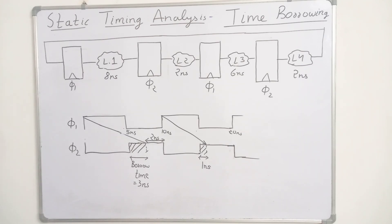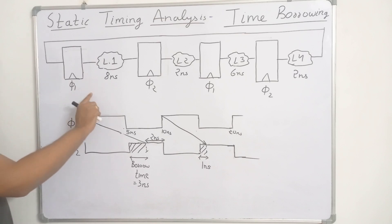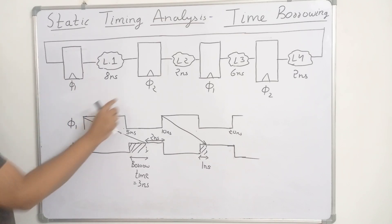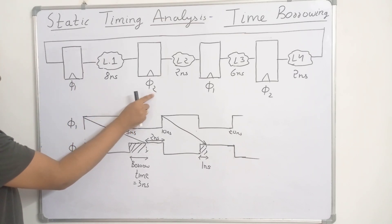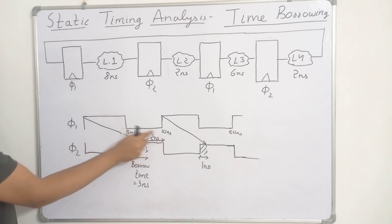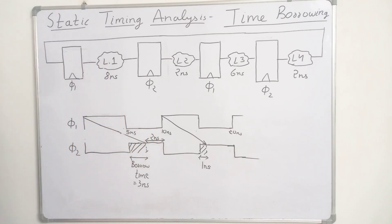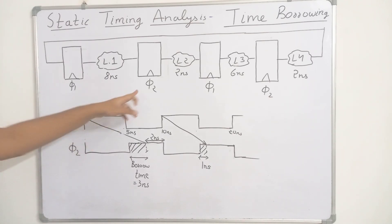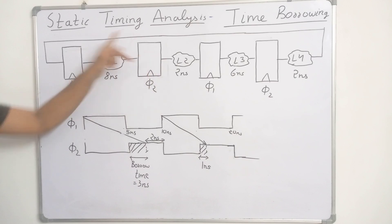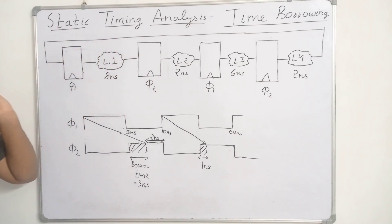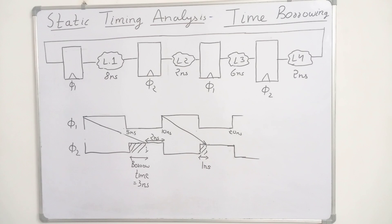If instead of these 4 latches we were using 4 edge-triggered flip-flops, this design will fail. There will be a timing violation at Φ2 because the clock period is only 5 nanoseconds and this combinational logic delay is 8 nanoseconds. But here we have used positive level-sensitive latches.